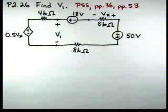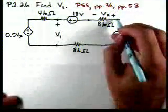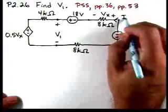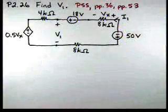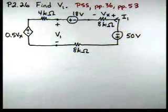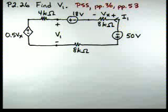If we look at the problem-solving strategy on page 36, it says define a current I in the circuit. I'm going to define a current I1 and I'm going to define it counterclockwise as shown on that diagram. So that completes step one.